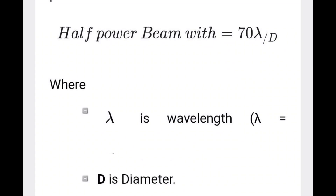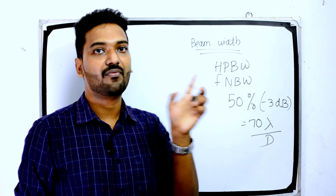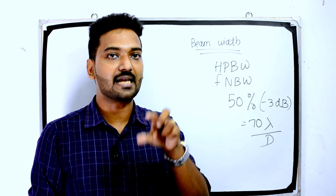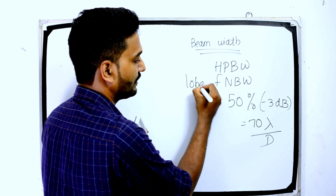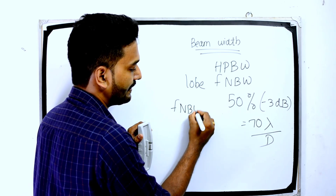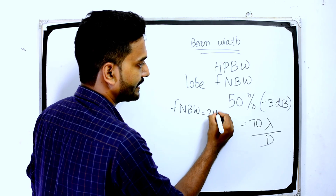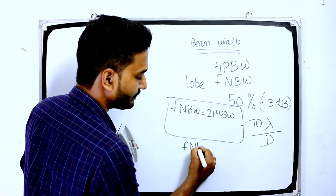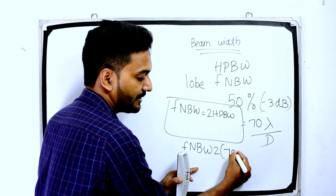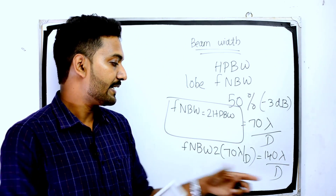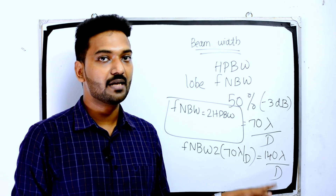The width of the main lobe is called the first null beam width (FNBW). The formula for FNBW is equal to 2 × HPBW = 2 × 70λ/d = 140λ/d, where λ is the wavelength and d is the diameter.